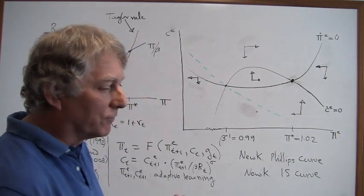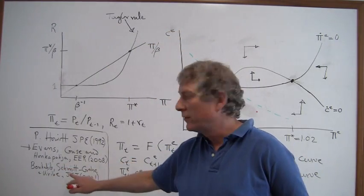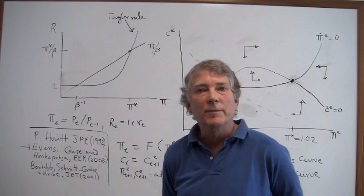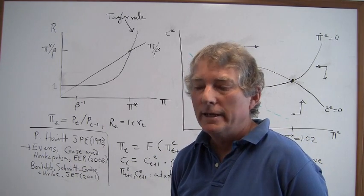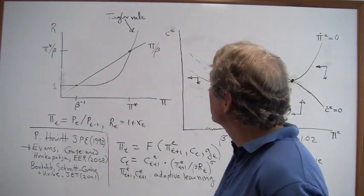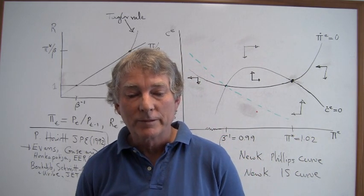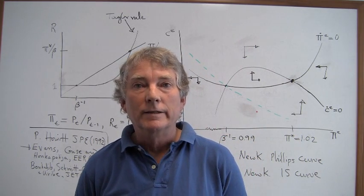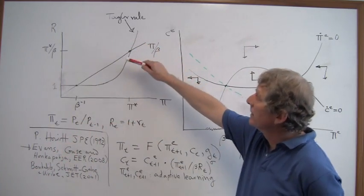So the crucial framework here, our starting framework, is actually a paper by Benedict-Schmidt-Groey-Uribe that was in the Journal of Economic Theory in 2001, where they pointed out that if you have a Taylor rule subject to a zero-interest lower bound, then you got the possibility of multiple equilibria. I'm going to summarize the whole argument in two diagrams, that's the first diagram, so let me show you that.